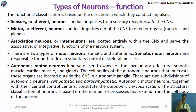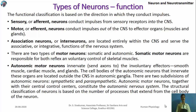Neurons can also be classified based on function: sensory neuron, motor neuron, association neuron, autonomic motor neuron, and somatic motor neuron. These functional classifications align with the terminologies introduced at the beginning.